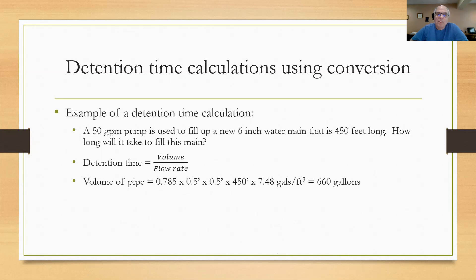What I've chosen to do is to take the diameter of 6 inches divided by 12, I get a half a foot diameter. I'm doing 0.785 times a half a foot squared times the 450 foot length. That will give me cubic feet. So I have to multiply by 7.48 gallons per cubic feet. Now I've calculated my volume of 660 gallons. I can put that into the formula because the flow rate that they gave me was 50 gallons per minute. And I see that the detention time is going to be 660 gallons divided by the 50 gallons per minute, or about 13.2 minutes.